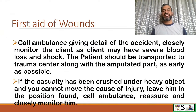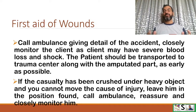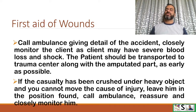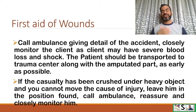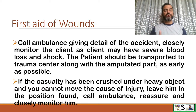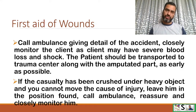Call an ambulance and give details of the accident. Closely monitor the patient, as they may have severe bleeding or shock. The patient should be transported to a trauma center along with the amputated part as early as possible so it can be reattached. If the casualty has been crushed under a heavy object and you are unable to move the cause of injury, leave them in position, call an ambulance, reassure the patient, and monitor closely.